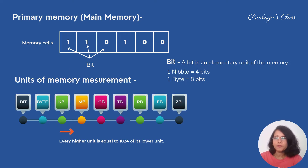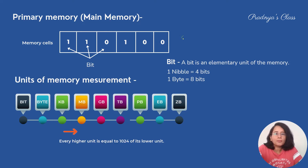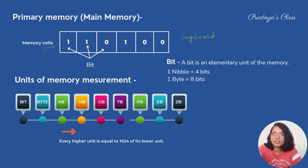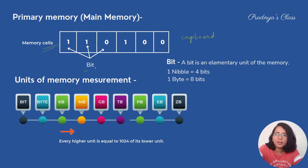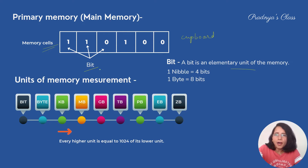Before studying types of memory in detail, let's understand what is memory. Memory is just like a cupboard — the way a cupboard has partitions, memory is also partitioned. These are called memory cells, and in each cell we store information in the form of bits. Bits means binary digits; a bit is an elementary unit of memory. There are two bits: 0 and 1.